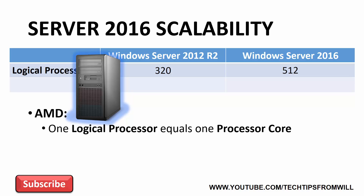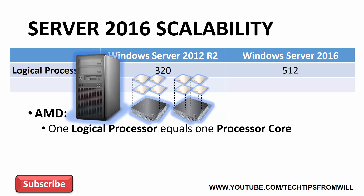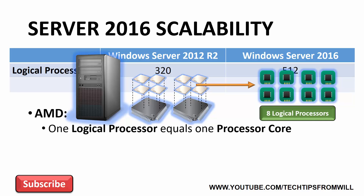Take, for example, a physical server. Imagine that this physical server has two physical AMD processors installed, and both of these physical processors are quad-core processors. When you add up the number of cores in this server, this gives you a grand total of eight cores. Since there are eight cores in the server altogether, this equates to eight logical processors, which can be allocated to virtual machines when Hyper-V is installed.